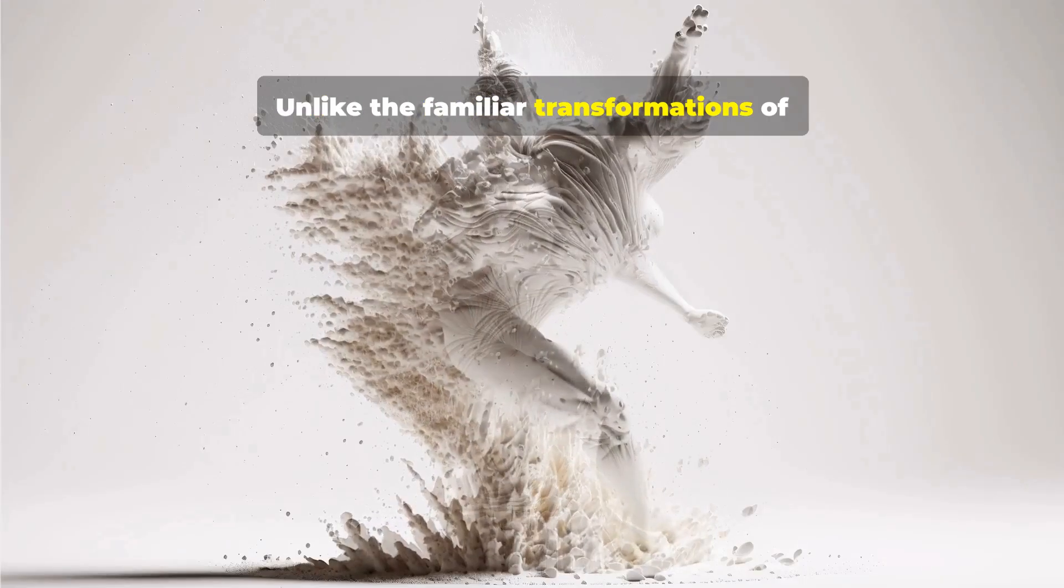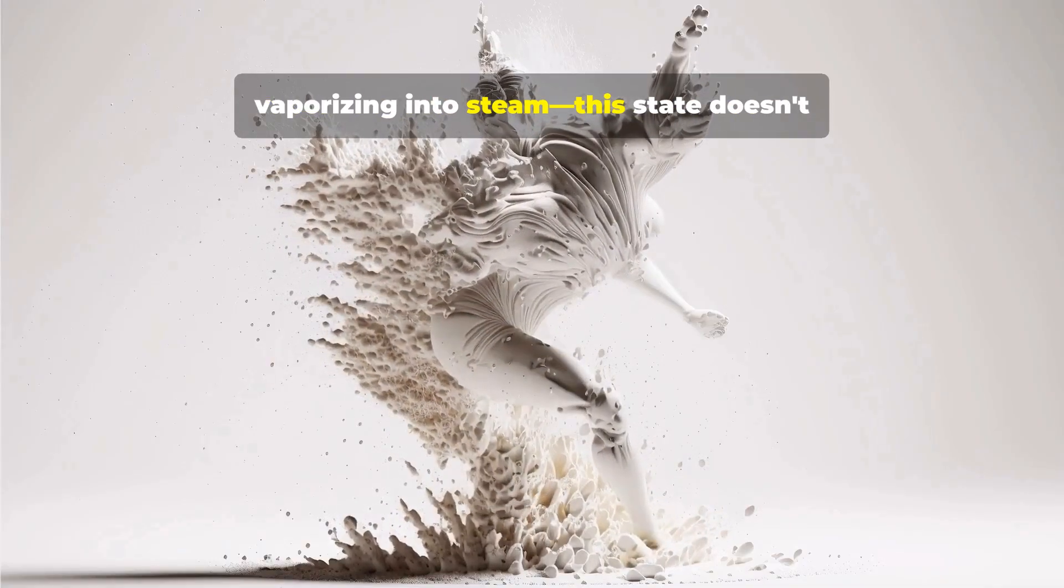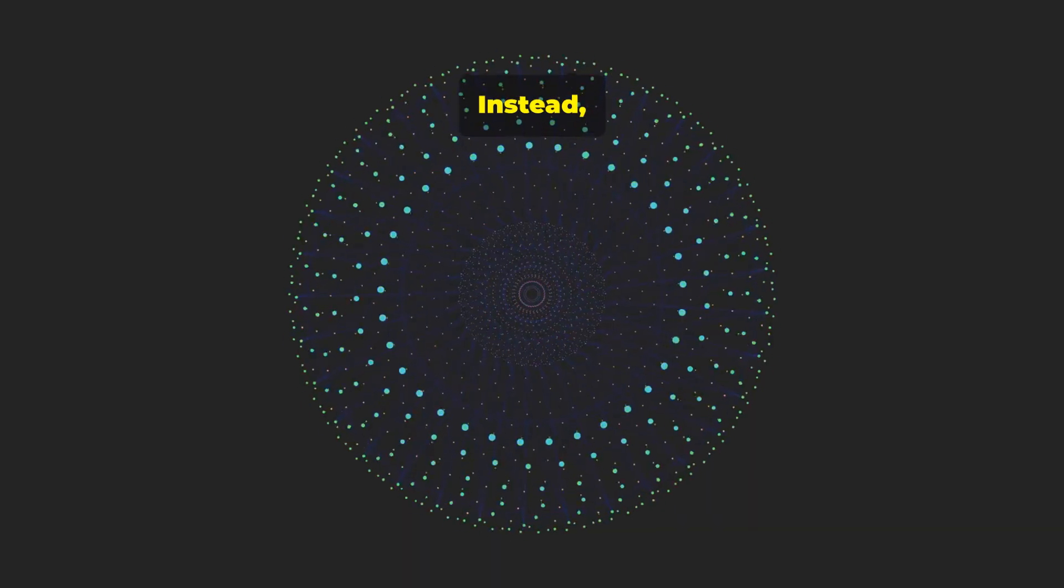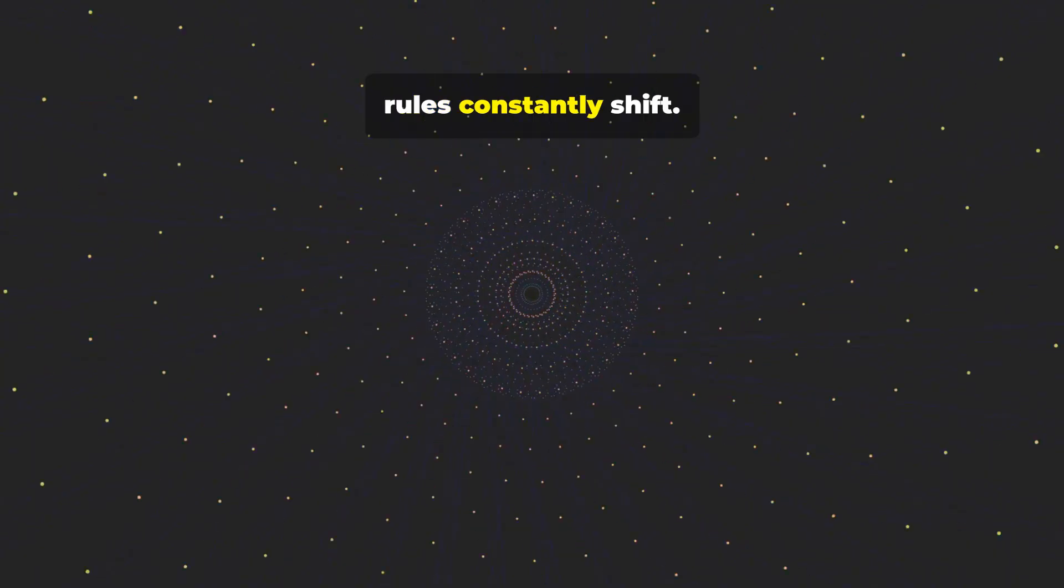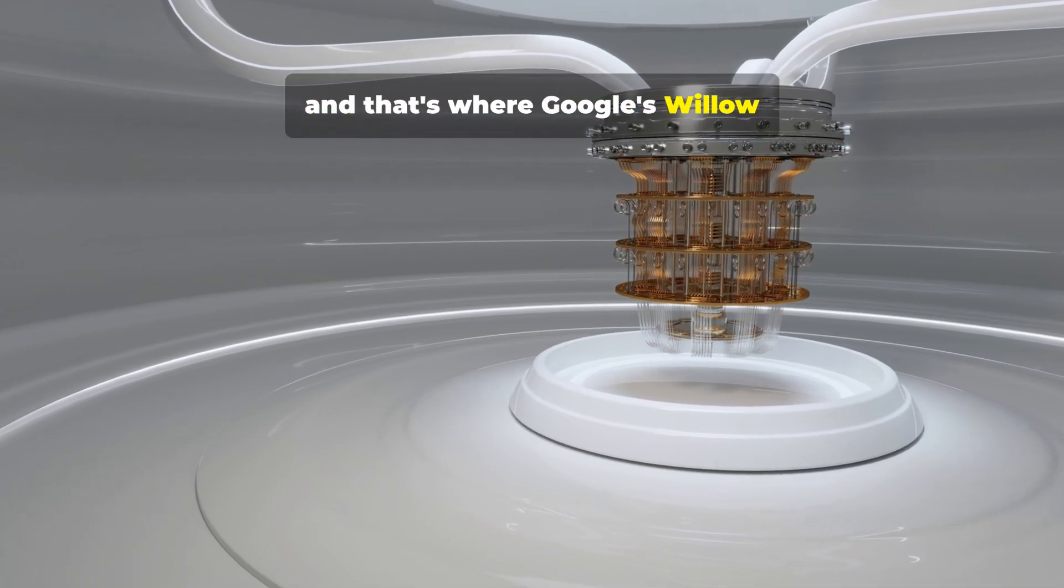Unlike the familiar transformations of matter, like water freezing into ice or vaporizing into steam, this state doesn't occur under steady balanced conditions. Instead, it requires systems to be pushed out of equilibrium, driven in rhythmic cycles where the rules constantly shift.